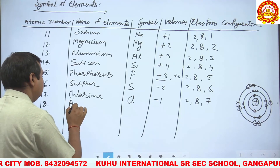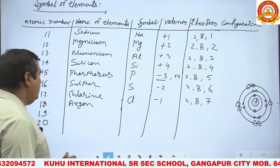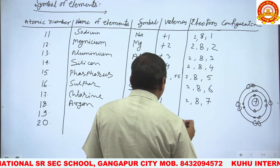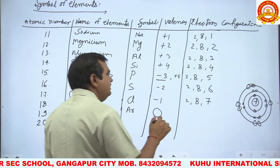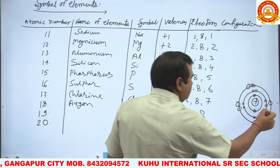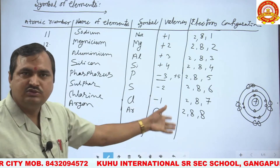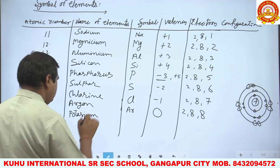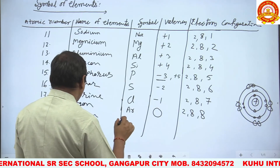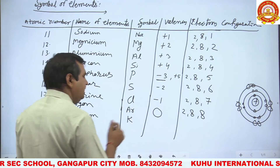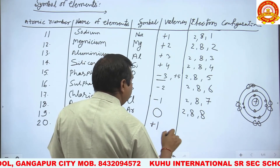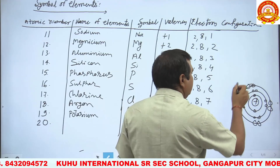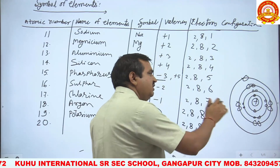Number 18: Argon, symbol Ar, valency 0. Why valency 0? Because Argon's outermost shell is completely filled, so it does not react with anything. Number 19: Potassium, symbol K. K comes from its Latin name Kalium. Valency is +1. A new orbit starts here — the fourth orbit is generated and one electron fills it. That is the diagram of Potassium.